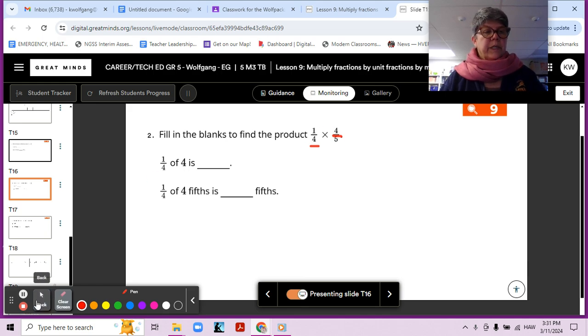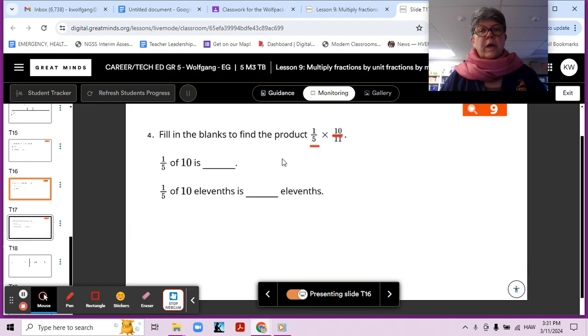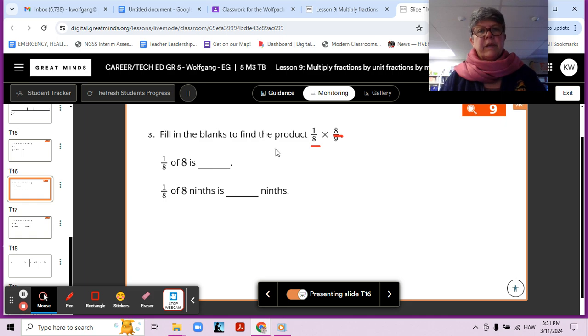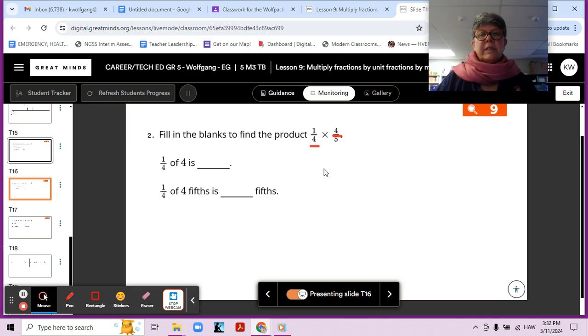All right, so also in number three, one eighth of eight ninths. Notice, once again, we have an eight in the denominator and then an eight in the numerator. That's why this works, because we're taking an eighth of eight of something. And here we're taking a fourth of four of something.